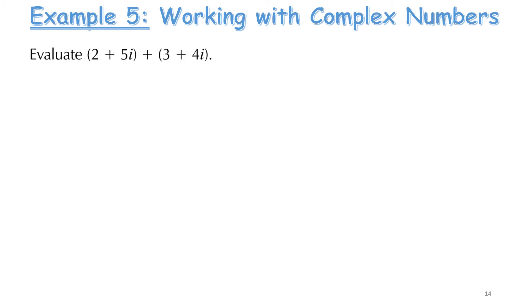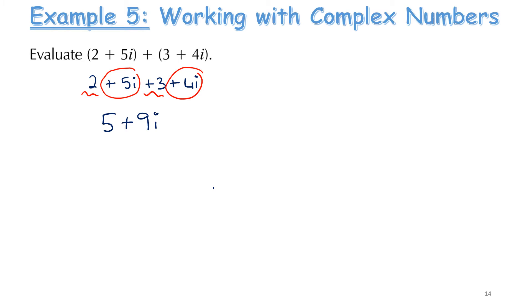Let's look at simply working with complex numbers. Here I have two complex numbers and I'm adding them. You can treat this like algebra: drop the brackets and add like terms. For (2 plus 5i) plus (3 plus 4i), the real parts give 5 and the imaginary parts give 9i, so the answer is 5 plus 9i. That's probably the easiest method. You can also work it in an arithmetic column layout, though that works better for addition.